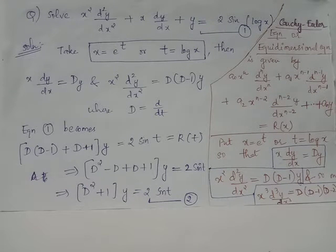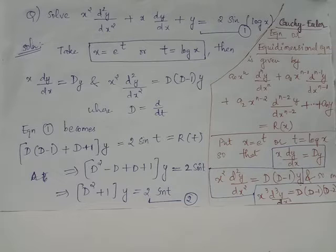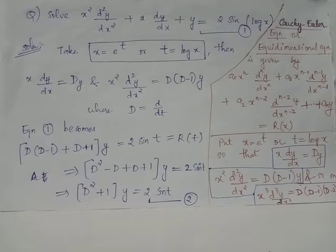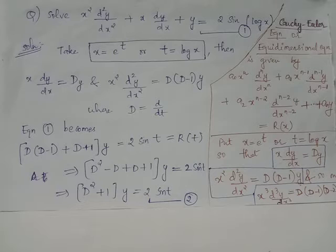In order to convert this differential equation to one with constant coefficients, we make use of the transformation x equals e^t, also written as t equals log x. With this transformation, x dy/dx can be rewritten as capital D acting on y, and x² d²y/dx² can be rewritten as D(D−1) acting on y, where capital D is the differential operator with respect to the independent variable t.